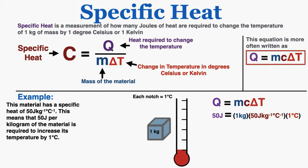A material's specific heat tells you how many joules are required to change the temperature of 1 kilogram of that material by 1 degree Celsius. As an example, we can pretend that this blue material in the bottom center has a specific heat of 50 joules per kilogram degree Celsius.